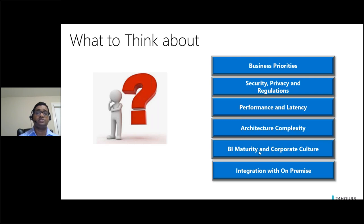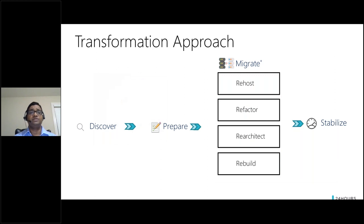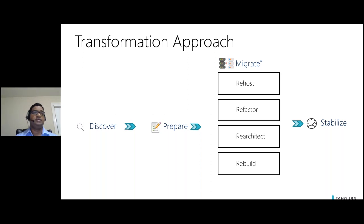Also consider the BI maturity — what is the current BI and corporate governance culture? Will they be ready for a big change or should you approach it more strategically? Keeping that in mind, this is a structured four-step transformation approach. Some take a two-step approach merging discover and prepare into one, or migrate and stabilize into one. In the discovery phase, you essentially conduct a feasibility study or requirements gathering. In the prepare phase, you execute multiple shorter POCs and narrow down on migration options.